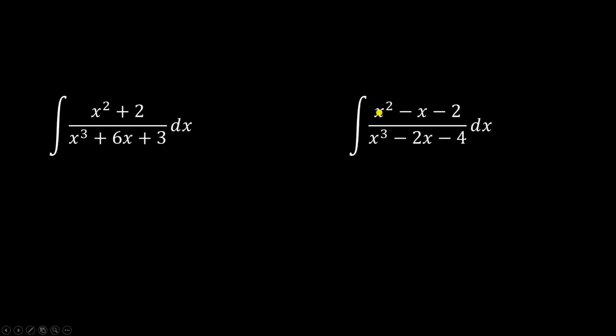So sometimes, a problem looks like it'll use partial fractions, but it really doesn't. Like both of these problems, you can solve them without using partial fractions. Do you see how? For the left problem, you can use a u substitution with u equal to the bottom, x cubed plus 6x plus 3. And then for the second one, you can first factor the top and the bottom, and there's going to be a common factor that cancels out. Once the factor cancels out, you can then use a u-sub to solve that as well.